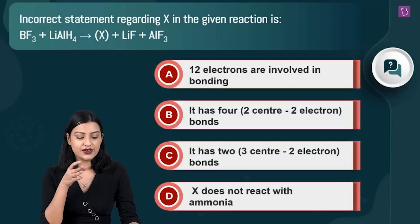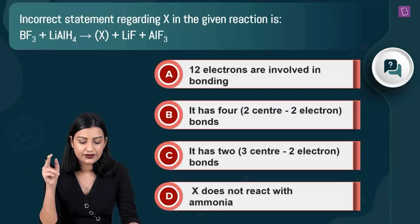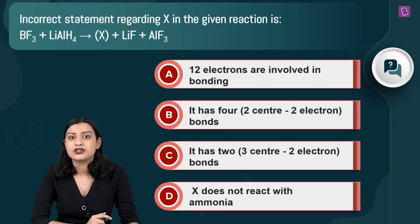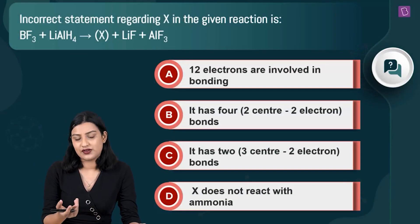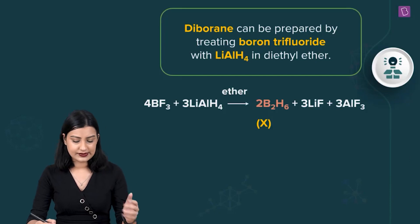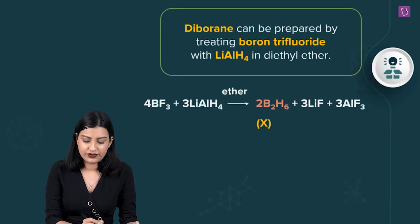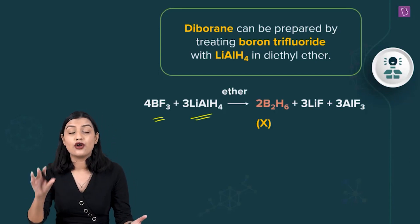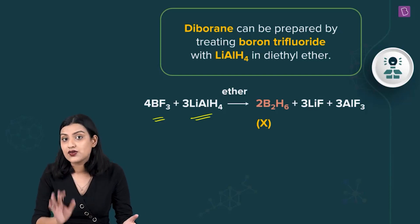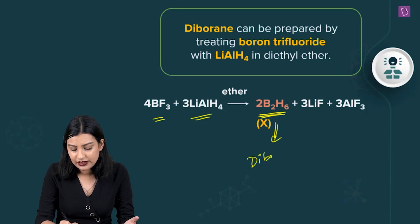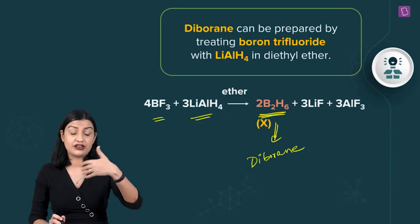The next question gives the reaction: BF₃ + LiAlH₄ → X + LiF + AlF₃, asking for the incorrect statement about X. In this reaction, BF₃ reacts with LiAlH₄ in the presence of an organic solvent (ether) — water cannot be used. The product X is B₂H₆, diborane.